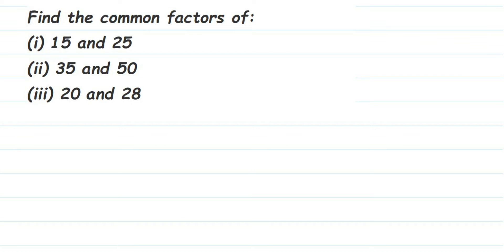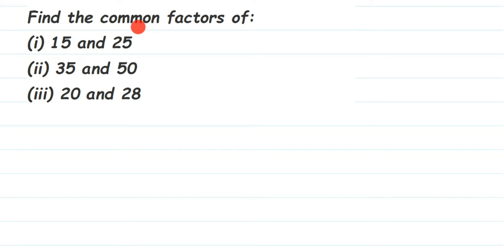Here's a question on factors. The question is: find the common factors. The first one is 15 and 25. Common factors means first we have to find out the factors of 15 and 25, and then later we have to see which factors are common. Now, factors are nothing but you have to check if that number is divisible by which all numbers.